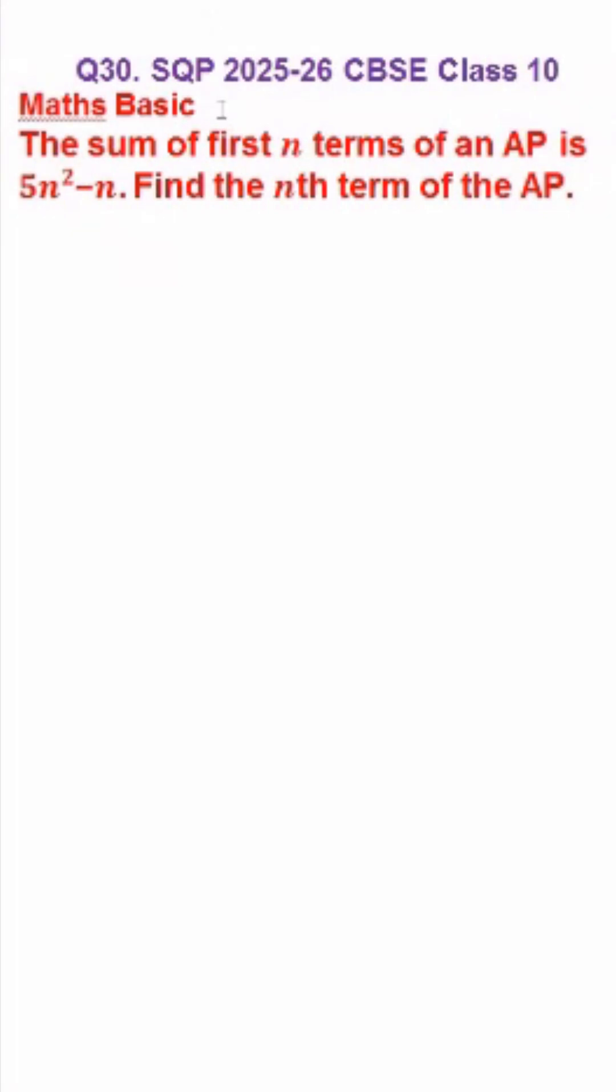The question is: the sum of first n terms of an AP is 5n square minus n. Find the nth term of the AP.